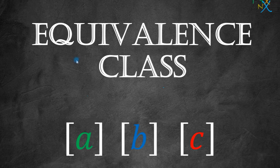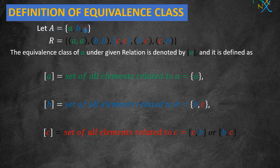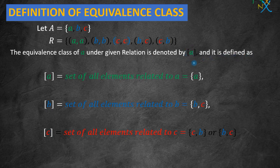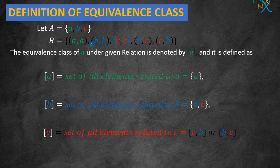Hi guys, welcome back again. In this lecture we will see what is equivalence class. Consider a set A which has elements a, b, and c, and a relation R is defined on set A which has ordered pairs: (a,a), (b,b), (c,c), (b,c), and (c,b). The equivalence class of a under a given relation is denoted by [a] and is defined as the set of all elements which are related to a.